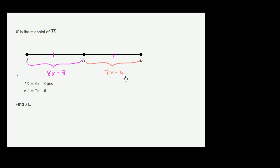So first, let's figure out x. And the best way to figure out x is based on the fact that we know that 8x minus 8 is equal to 7x minus 6.